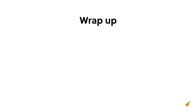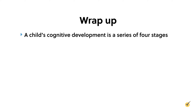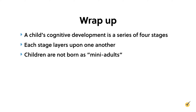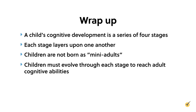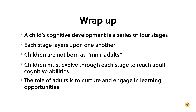Now that we've discussed Piaget's theory, here are some things to remember. According to Jean Piaget's theory of cognitive development, a child's intellectual growth is a series of four stages building and layering upon one another starting at birth. Children are not automatically born into the world as miniature adults with predetermined skill sets. Rather, Piaget proposed that a child must experience and evolve through each of the four theorized stages to reach adulthood cognitive abilities systematically. It's the adult's role to nurture and engage in these learning opportunities. Hope this review was helpful — thanks for watching and happy studying.